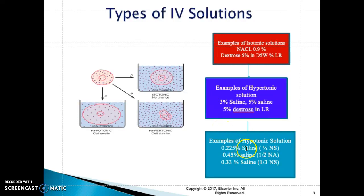Another example is a hypotonic solution. Different concentrations include 0.225% saline, 0.45%, and 0.33% saline. The most important thing to know is when to hang a hypotonic solution. Patients with DKA, hyperosmolality, or hyperglycemia may be candidates. One important thing to remember: never hang a hypotonic solution with a patient at risk for head trauma or increased ICP (intracranial pressure) — it is contraindicated.